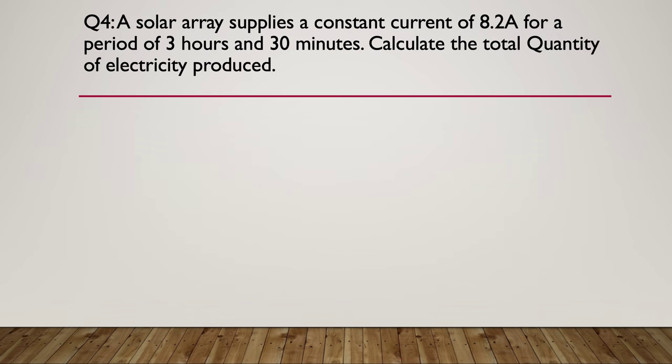Question four. A solar array supplies a constant current of 8.2 amps for a period of three hours and 30 minutes. So let's calculate the total quantity of electricity produced. So pause here while you think about the quantity of electricity.